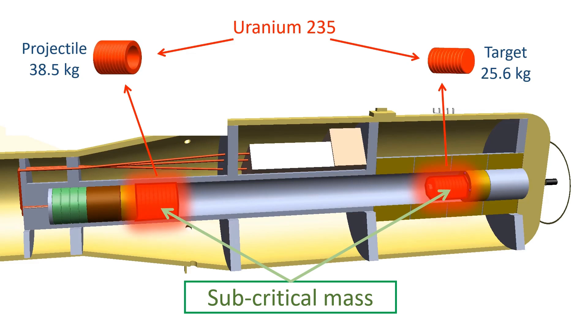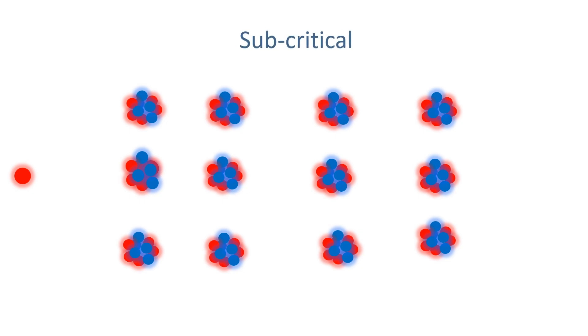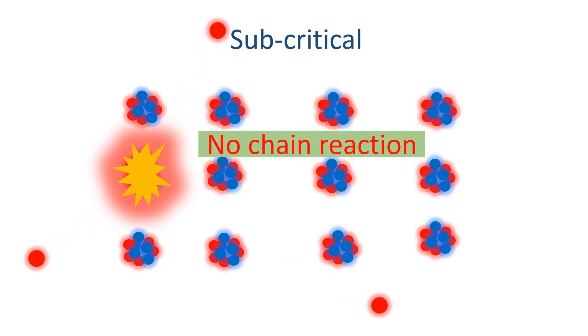What is a sub-critical mass? A sub-critical mass is a mass that does not have the ability to sustain a fission chain reaction. By calculating the mass and shape of the uranium, any spontaneously emitted neutrons are likely to escape, preventing a chain reaction from occurring.